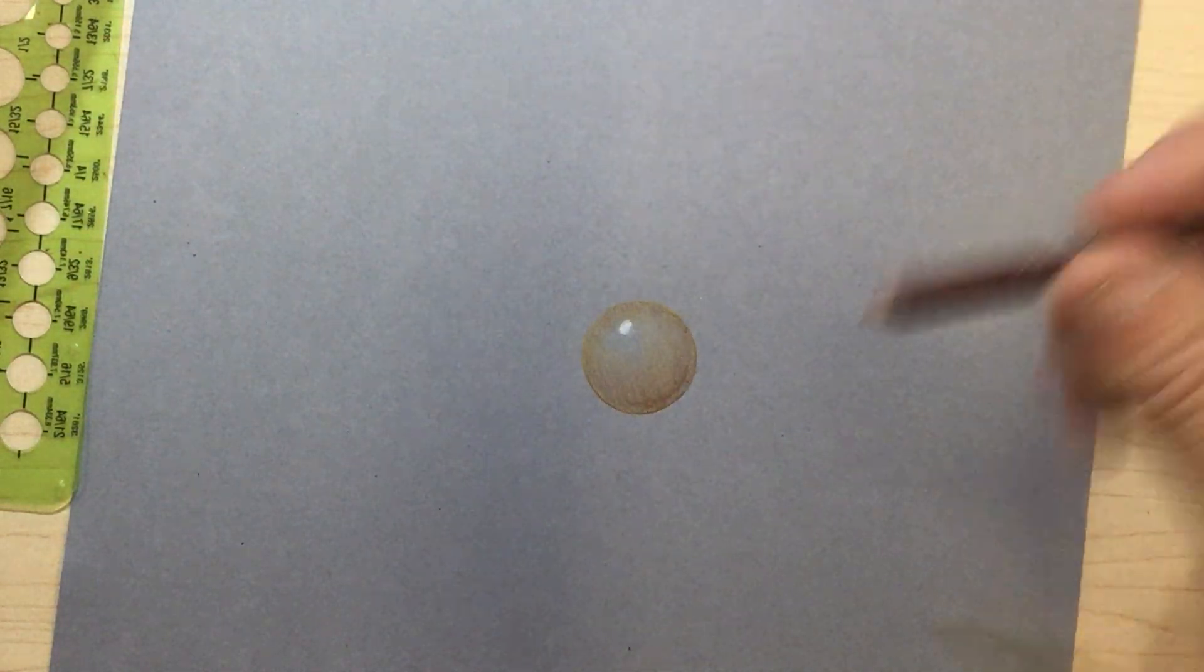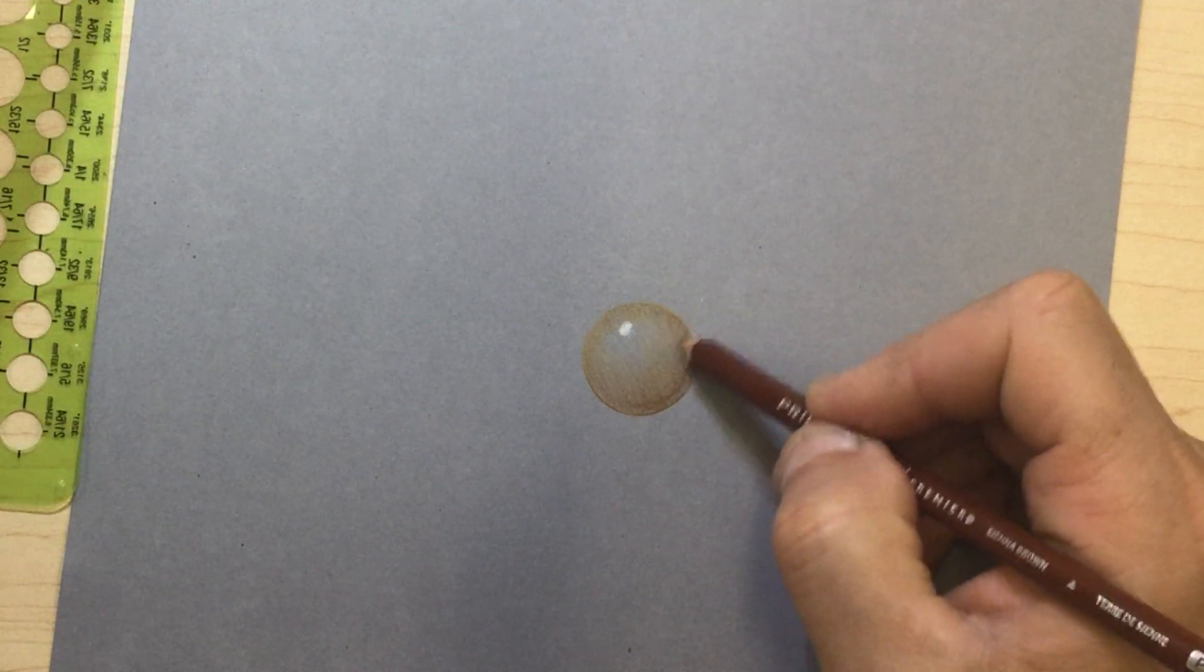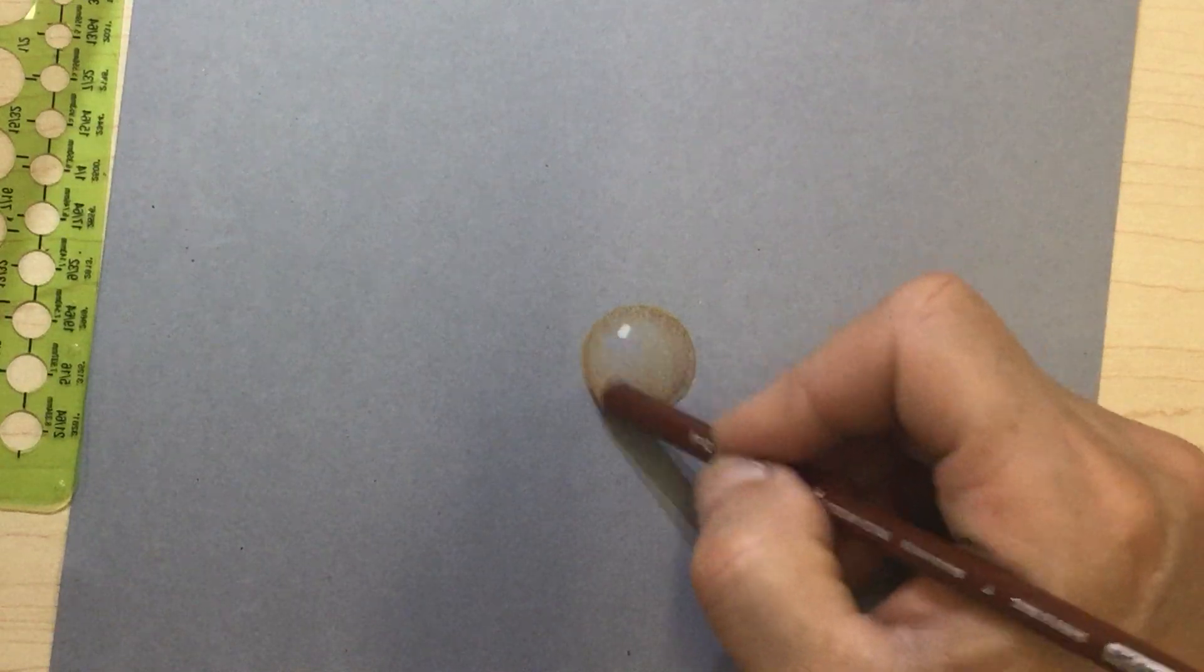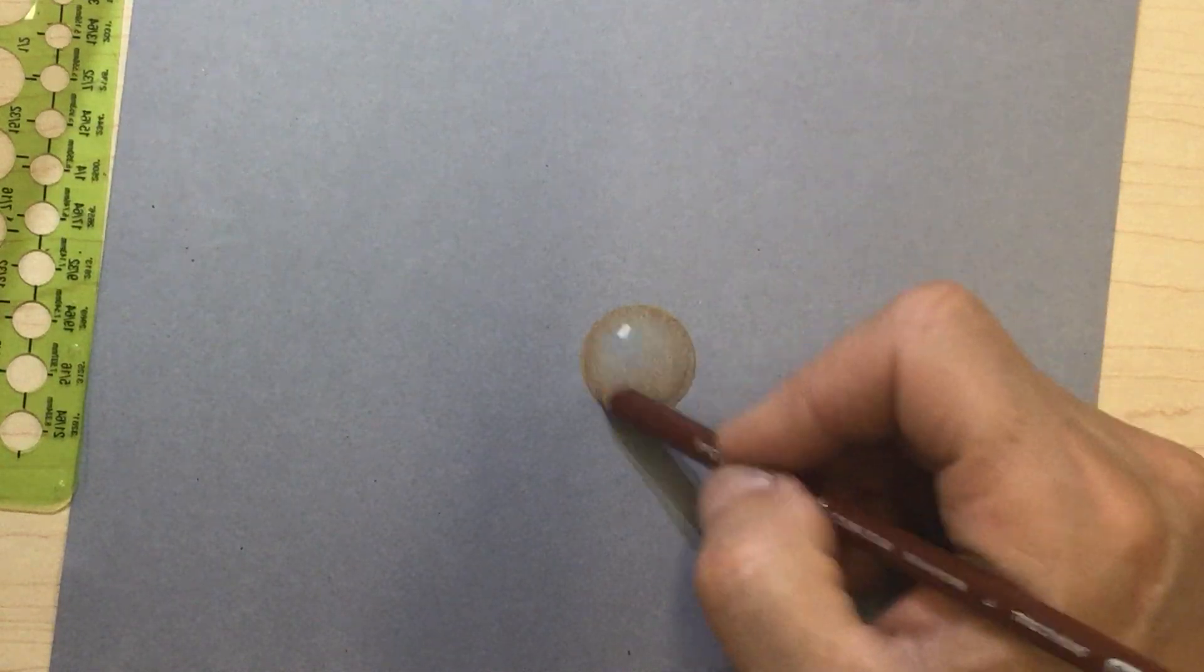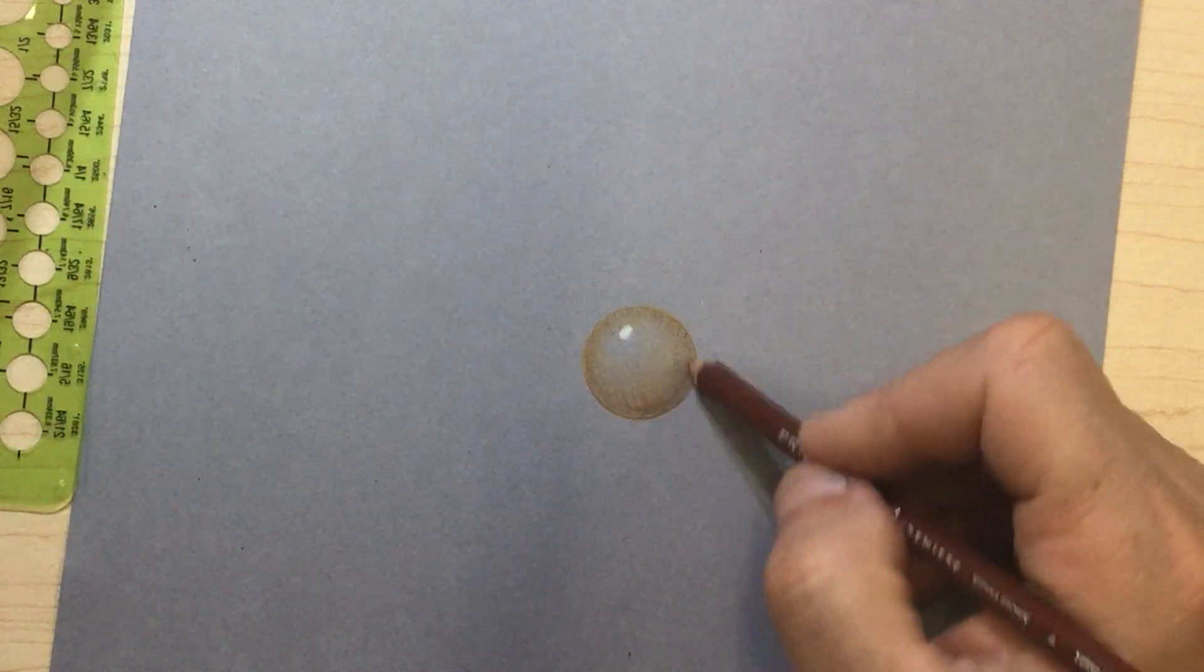Now, I'm going to add a little bit more Sienna, so that this back side is darker, and give it a bit more form. Remember we cannot erase. Do not put too much tone down at once.